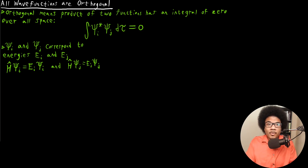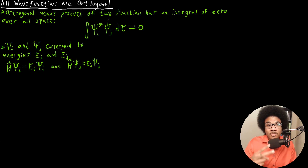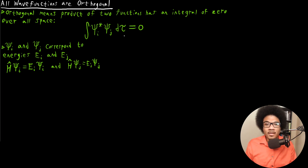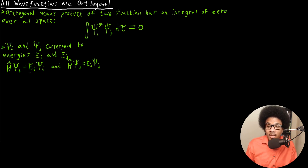In this video, we're going to look at another property of quantum mechanical operators and their corresponding eigenfunctions, which is that these wave functions are orthogonal. What does it mean for something to be orthogonal? If we take the product of two functions and integrate over all space, the evaluation of that integral should give us zero. This property is true for any quantum mechanical operator, and it's a direct consequence of the fact that they are Hermitian. We're going to evaluate and prove that.